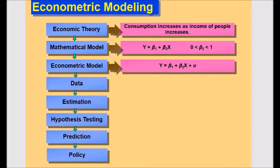known as the disturbance, which is a stochastic variable that has well-defined probabilistic properties. The disturbance term may well represent all those factors that affect consumption, but are not taken into account explicitly.